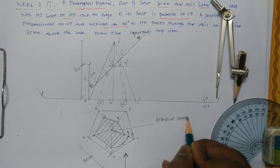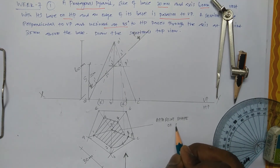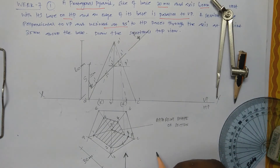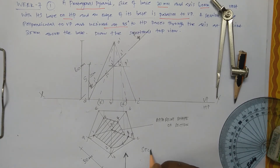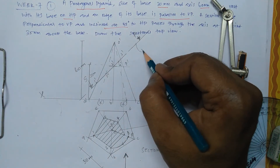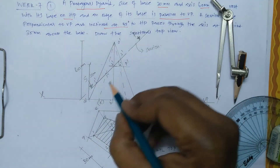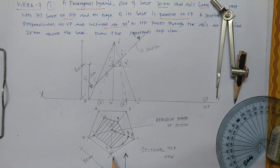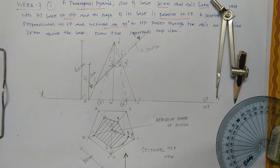Write 'apparent shape of section' for this shaded portion. This is the sectional top view. The remaining section diagram identifies everything. That's it.